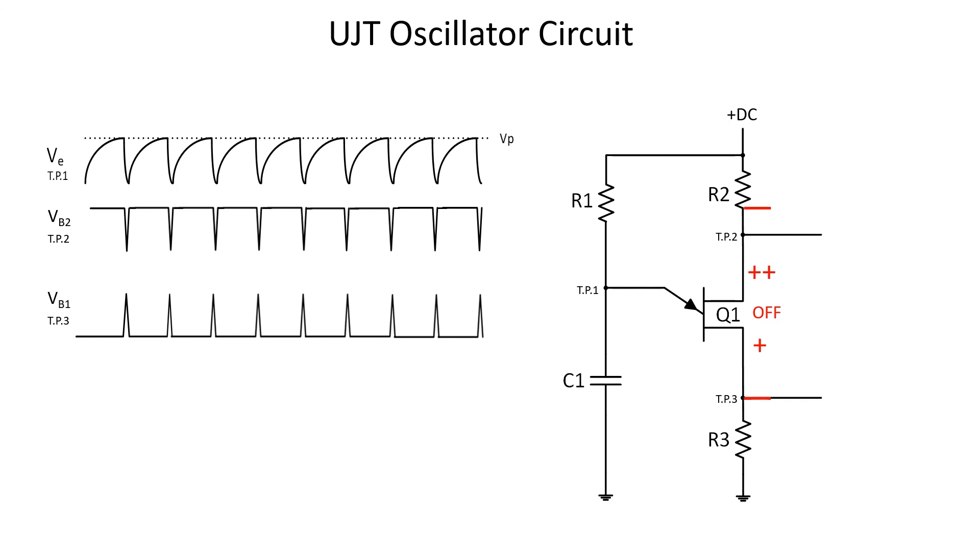Now we can talk about the sawtooth on test point 1 and Q1's emitter. As it charges, eventually it will reach what we call the firing voltage, or VP. As soon as it hits the VP, we are meeting both requirements, so Q1 will conduct. When Q1 turns on, C1 actually discharges through ground, through R3, Q1, and R2, developing a positive spike on test point 3 and a negative spike on test point 2.